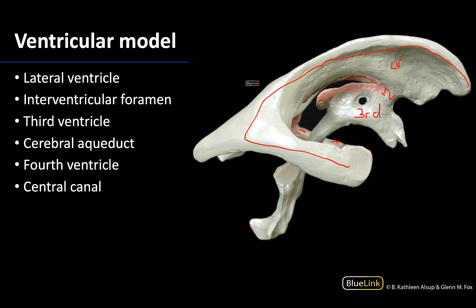The third ventricle is unpaired and in the midline, and you can see it will drain into your cerebral aqueduct. The cerebral aqueduct connects the third ventricle to the fourth ventricle, which you can see right here. The fourth ventricle is continuous with the central canal, which heads into the spinal cord.